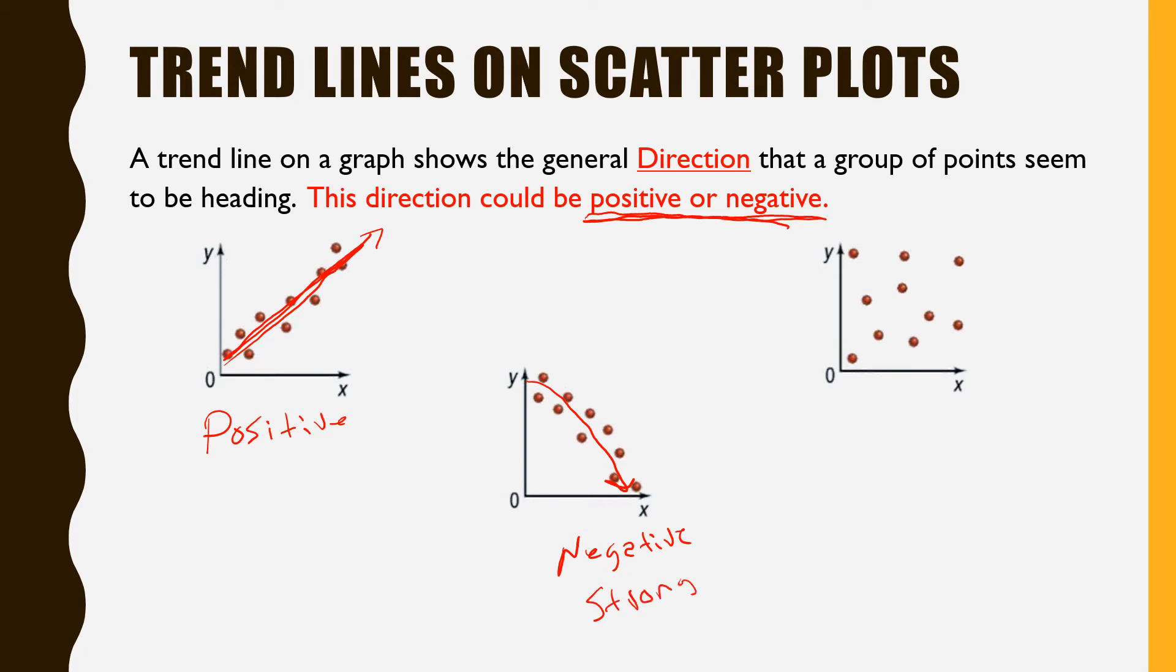And this one is extremely erratic and there doesn't seem to be any correlation. This would be extremely weak correlation with no direction. We can't tell which direction these points are going. That'd be a very weak correlation there.